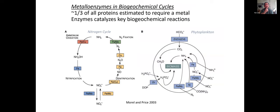Proteins are also important in biogeochemical cycles because they often contain metals. Some estimates suggest a third of all enzymes require metal for functionality. The nitrogen cycle — every single enzyme in it requires a metal. Key reactions in photosynthesis also require metal. There's this important connection between inorganic and organic chemistry, and metalloproteomics and metals and proteins are right at the center of all that, which is really exciting.